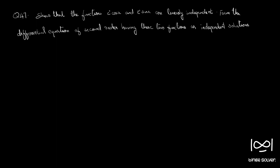Question 47: Show that the functions e^x·cos(x) and e^x·sin(x) are linearly independent, and form the differential equation of second order having these two functions as independent solutions. So we have y₁(x) = e^x·cos(x) and y₂(x) = e^x·sin(x).